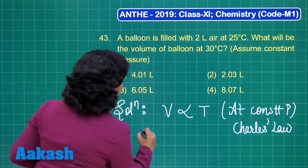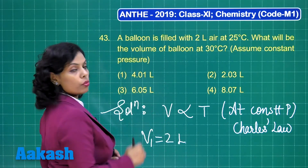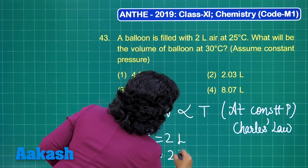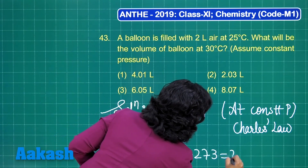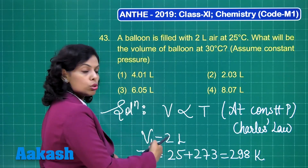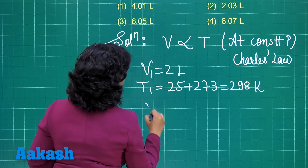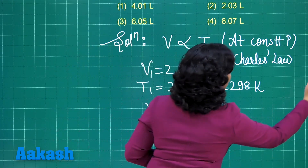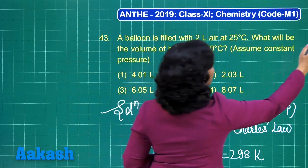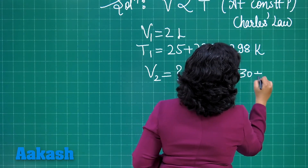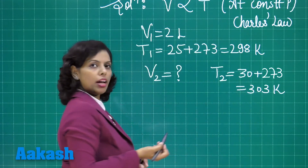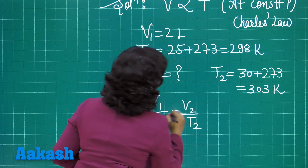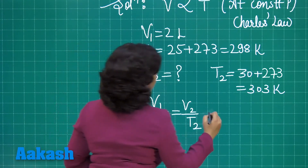The balloon is filled with 2 litre of air, so the initial volume V1 is 2 litre. The initial temperature T1 must be taken in Kelvin: 25 degree Celsius becomes 25 plus 273, that is 298 Kelvin. We need to find V2, the volume when the temperature becomes T2, which is 30 degree Celsius, that is 30 plus 273 equals 303 Kelvin. As per Charles' law: V1 by T1 should be equal to V2 by T2.